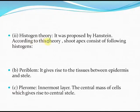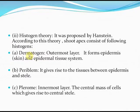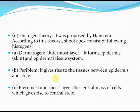The histogen theory was proposed by Hanstein. According to this theory, the shoot apex consists of following histogens: Dermatogen, the outermost layer, forms the epidermis and epidermal tissue system. Periblem gives rise to the tissues between the epidermis and the stele. Plerome, the innermost layer, is the central mass of cells which gives rise to the central stele.